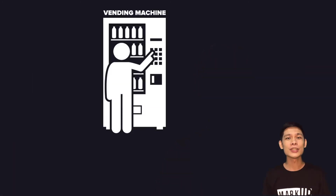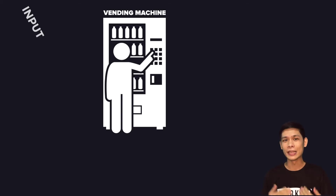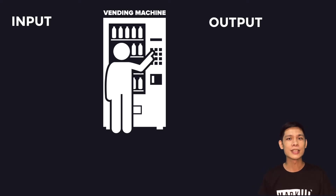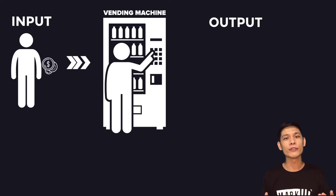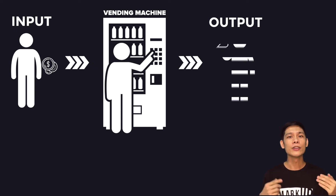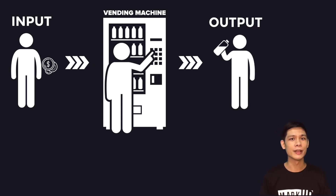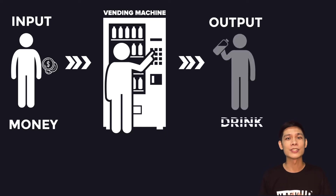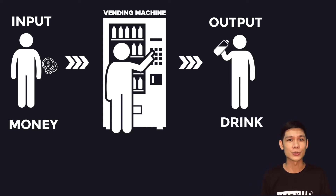Let's continue by defining a function. A function is similar to a vending machine — it takes an input value and in return gives an output value. For instance, you have to insert coins in order to get a drink from a vending machine. Therefore, the input value is the money and the output value is the drink. And that is how functions work.